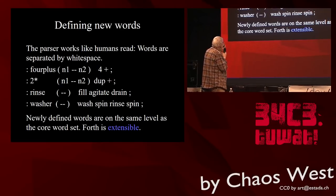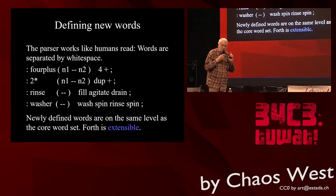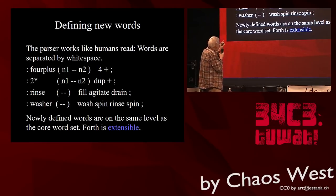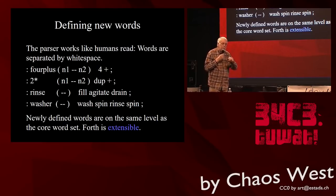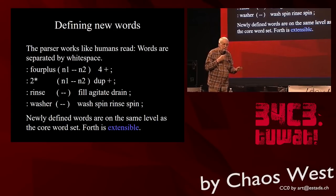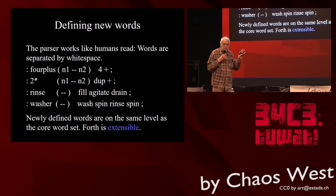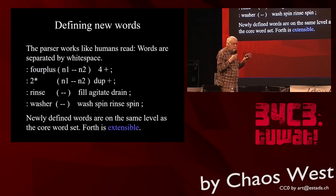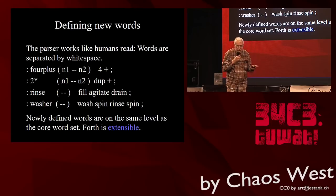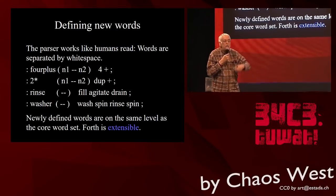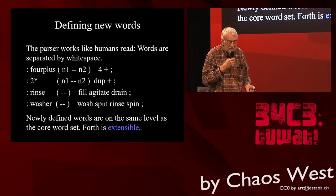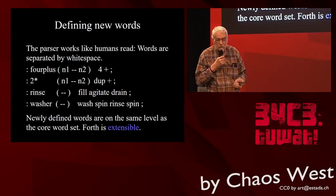What makes Forth so unique and why it is called an extensible language is the fact that newly defined words are exactly on the same level in terms of usability as the core word set we started with. In a sense you could say the Forth programming language is the assembler of a virtual machine that you can extend — you can increase the number of instructions that this virtual machine is able to execute.